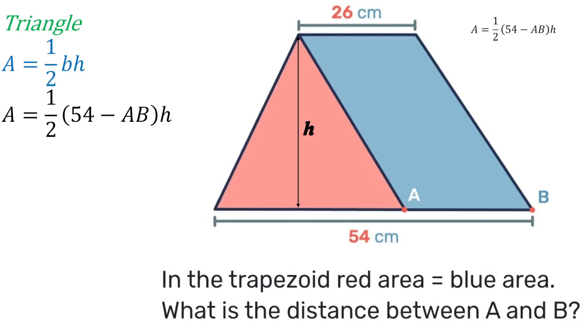Now using the information that the red area is equal to the blue area, in other words that means that the red area is equal to half the area of the trapezoid. But remember the area of the trapezoid we just found to be 40h, so half of 40h is 20h.